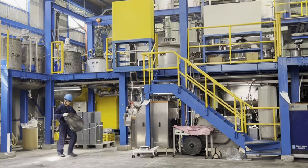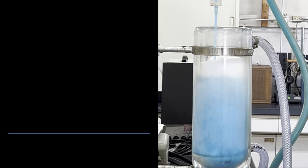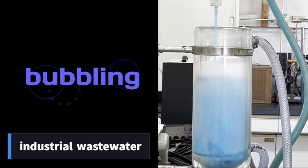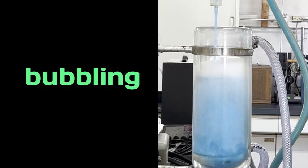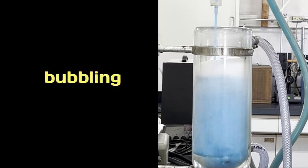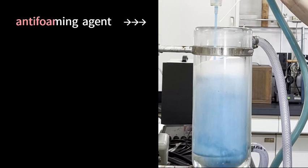This is industrial wastewater. You can clearly see the bubbling. If this foam gets into the pump piping, this leads to a reduction in pump capacity, which in turn reduces operating efficiency. Add an anti-foaming agent.